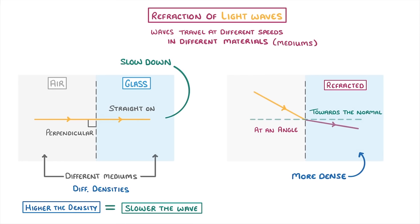Which, remember, is this dashed line perpendicular to the surface. So we can see that instead of carrying straight on in this direction, it's actually bent upwards a little bit towards our normal.